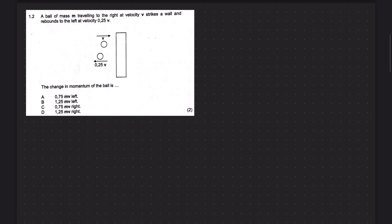Let's look at the next one. Question 1.2. A ball of mass M traveling to the right at velocity V strikes a wall and rebounds to the left at velocity 0.25V. The change in momentum of the ball is.